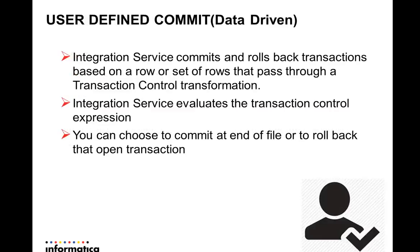User-defined commit, also known as data-driven commit: during a user-defined commit session, the integration service commits and rolls back transactions based on a row or set of rows that passes through the Transaction Control Transformation (TCT). The integration service evaluates the transaction control expression specified in the TCT for each row that enters the transformation. The return value of the transaction control expression defines the commit or rollback point. You can choose to commit at end of file or to rollback the open transaction.